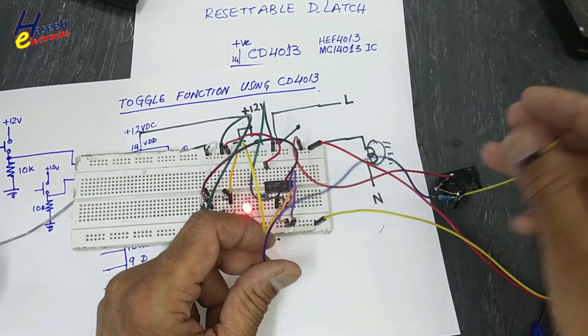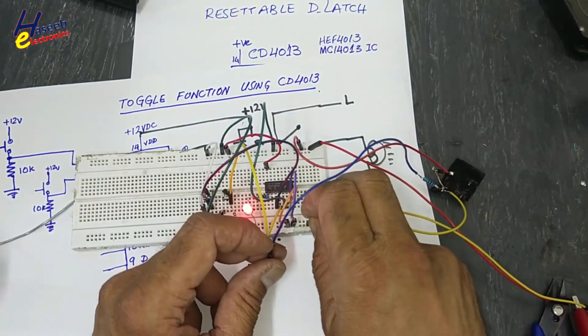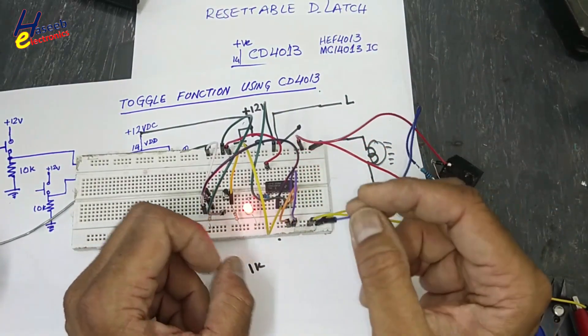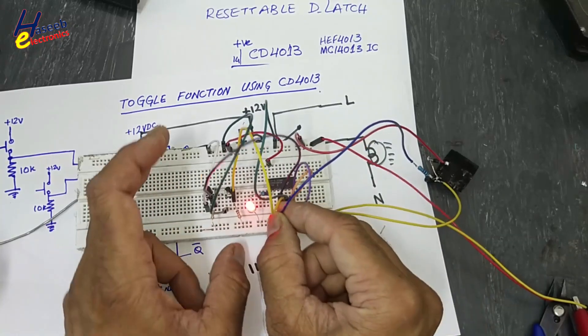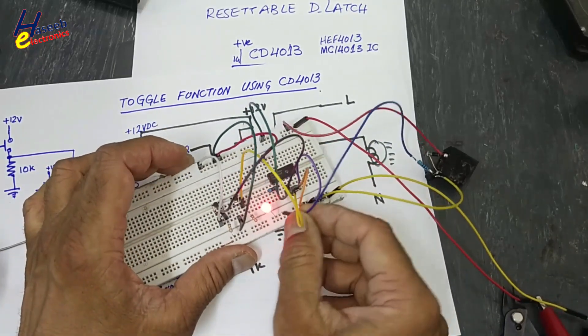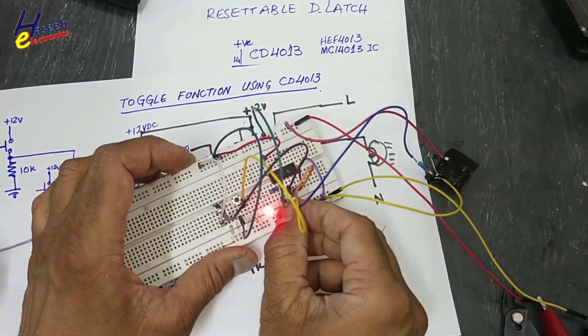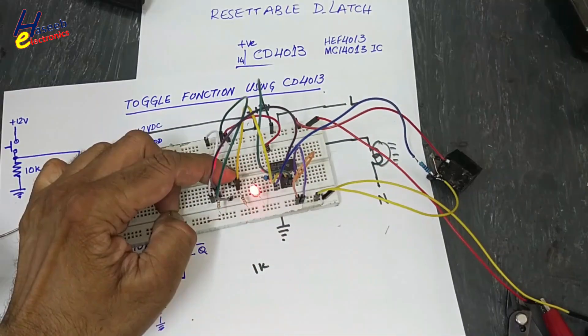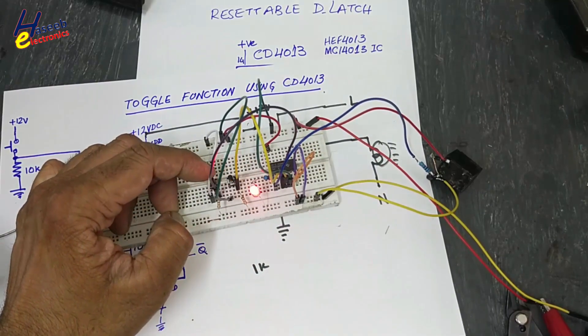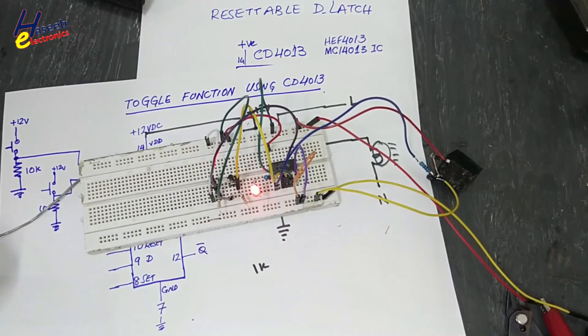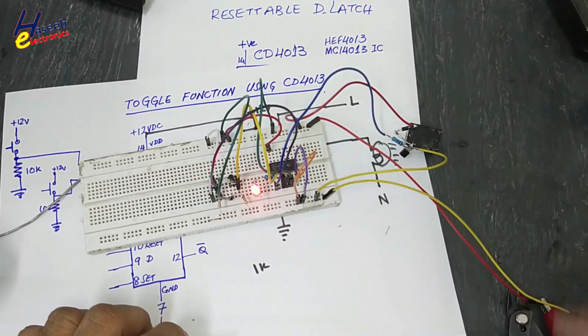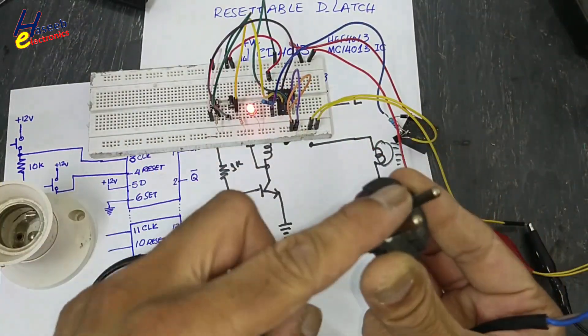Q output. The relay is giving a click sound. Now we will connect a 220-volt lamp. 220-volt input.